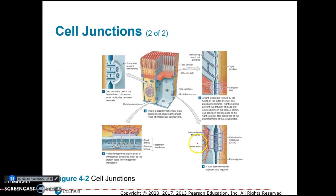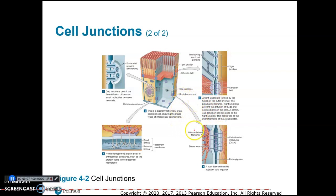Looking at a view of an epithelial cell: the apical surface is at the top, and the basement membrane is at the bottom. Tight junctions form a very tight seal between adjacent cells so that materials can't pass.